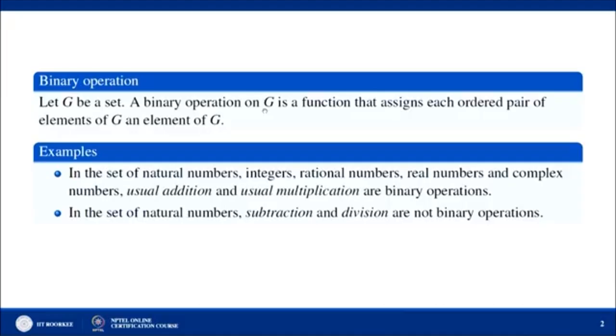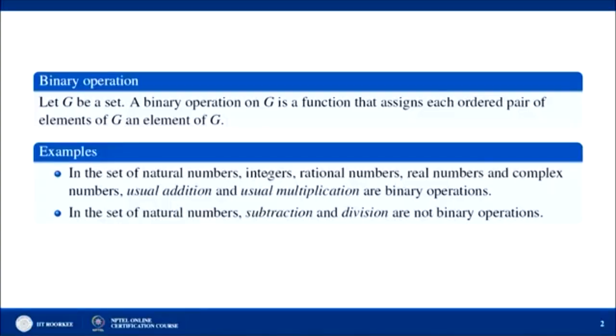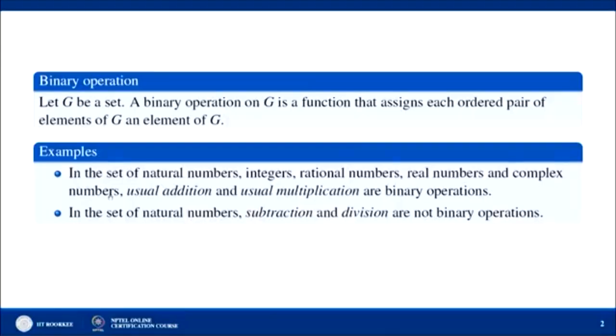For example, take the set of natural numbers and apply usual addition. If we take any two arbitrary natural numbers and apply usual addition, the resultant is also a natural number — so usual addition for the set of natural numbers is a binary operation. Similarly, for integers, rational numbers, real numbers, and complex numbers, usual addition is a binary operation.